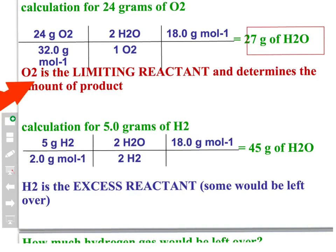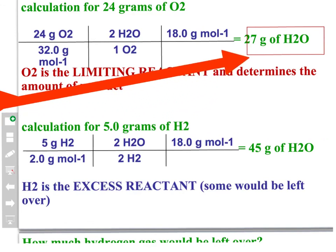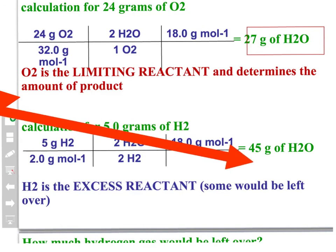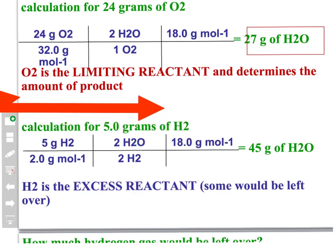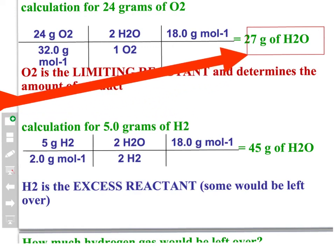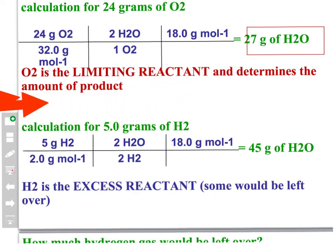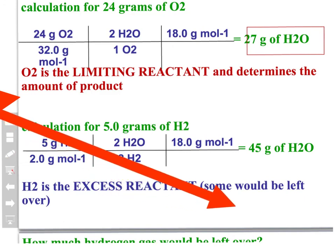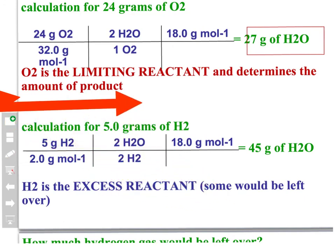In summary: when we start with 24 grams of oxygen and go through the steps, we produce 27 grams of water; when we start with 5 grams of hydrogen, we produce 45 grams of water. The amount of product actually produced is the smaller amount, which is 27 grams of water. So O₂ is the limiting reactant — it is used up completely — and the excess reactant is hydrogen, some of which is left over after the reaction stops.